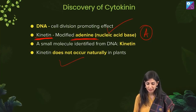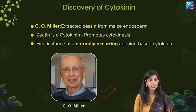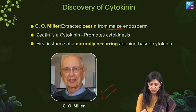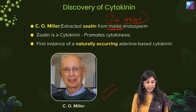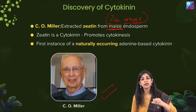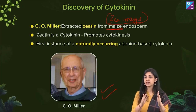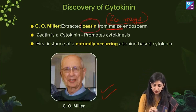The credit for finding the natural plant cytokinin goes to Miller. Miller found that in Zea mays — maize — in the endosperm of maize (which is a monocot endospermic seed), there is a substance like the kinetin that Skoog found. Because he extracted it for the first time from Zea mays, he called this kinetin-like substance zeatin.